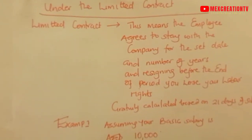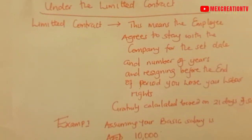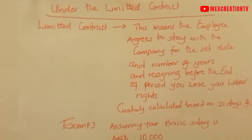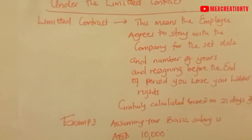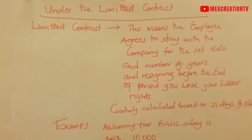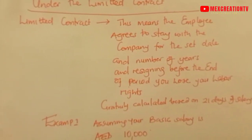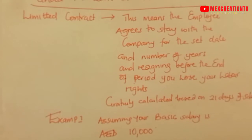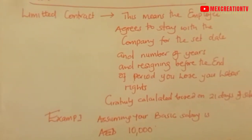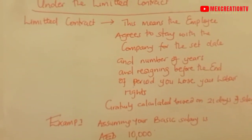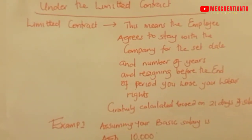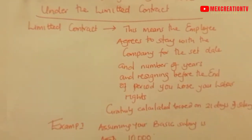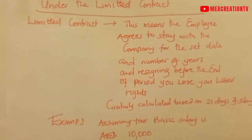In this video, we want to practically see how you can calculate gratuity under a limited contract. A limited contract may be for two or three years, depending on what you've agreed and the nature of work. Gratuity is calculated based on what you call 21 days of your salary — they count 21 days for each year that you complete in that company, and that is where gratuity is calculated from.